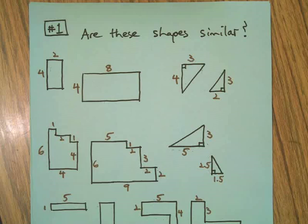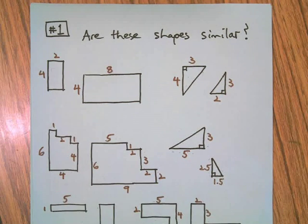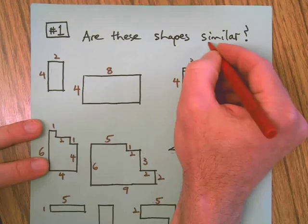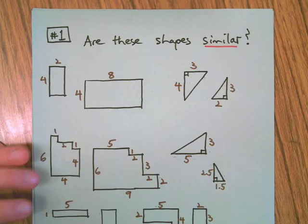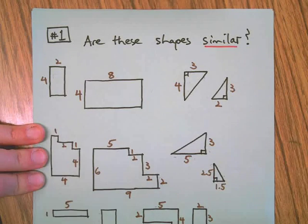You're looking at pairs of shapes - are they similar or not similar? Similar means that all the sides are in proportion. Sometimes you have to rotate, flip, slide, and do any translations.